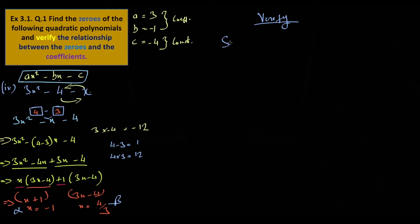Sum of zeros. Alpha plus beta, sum of zeros, is minus B by A.